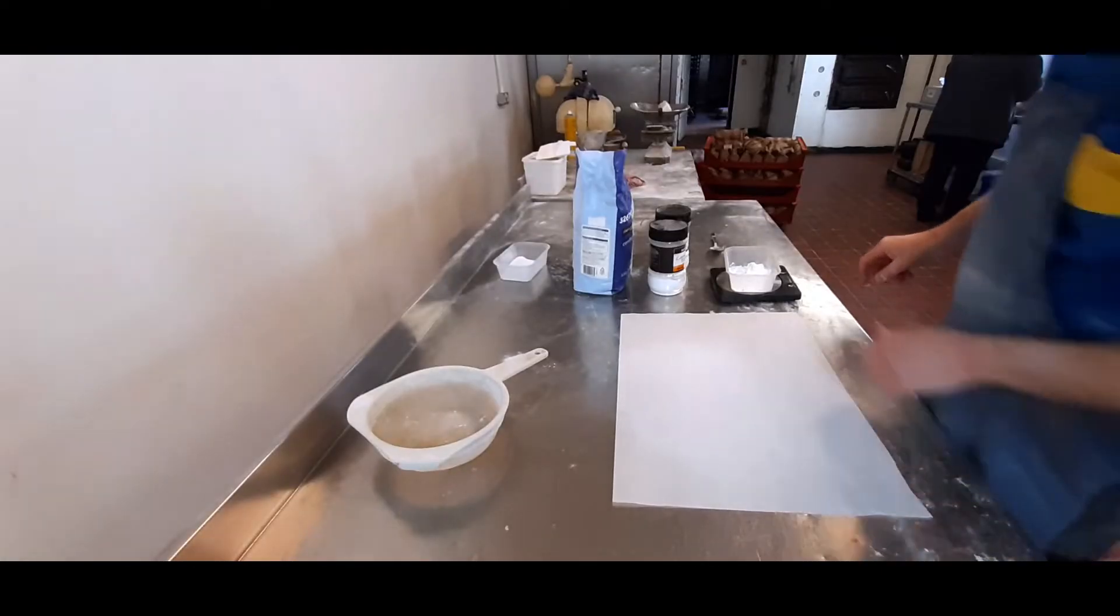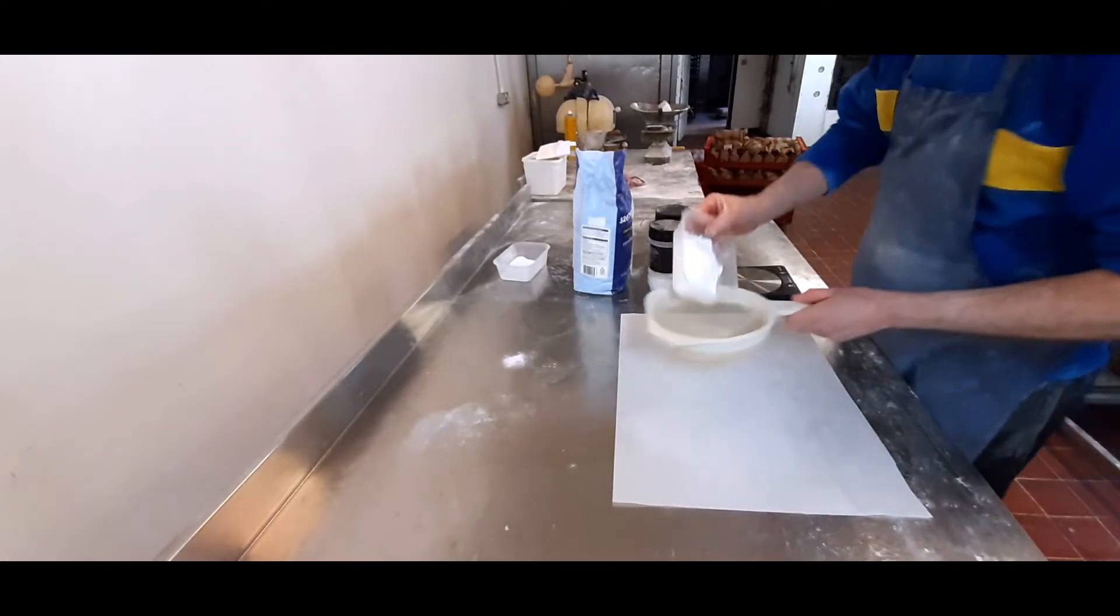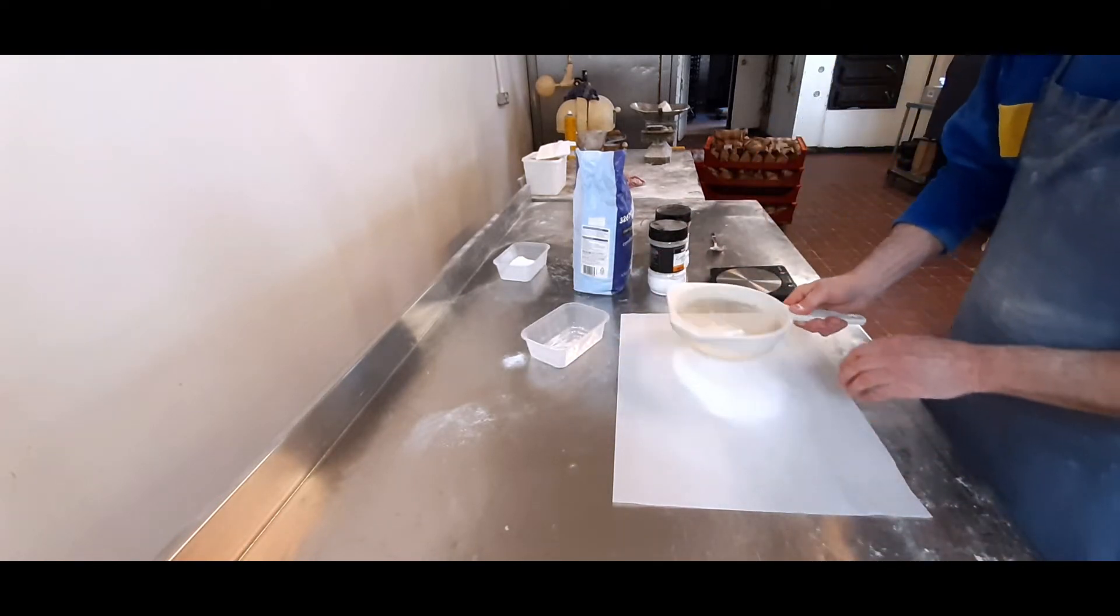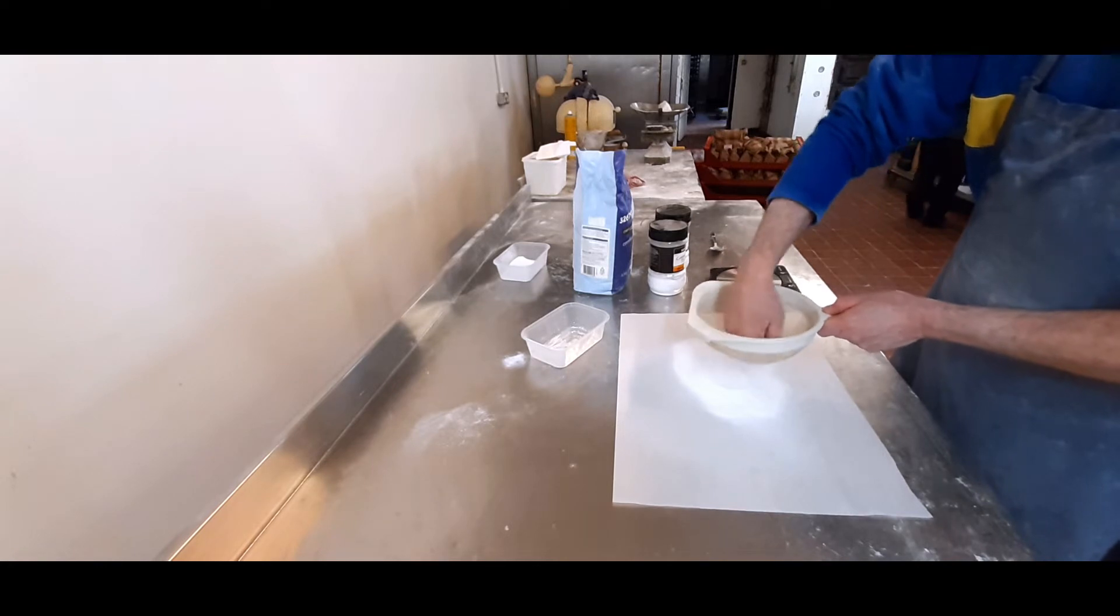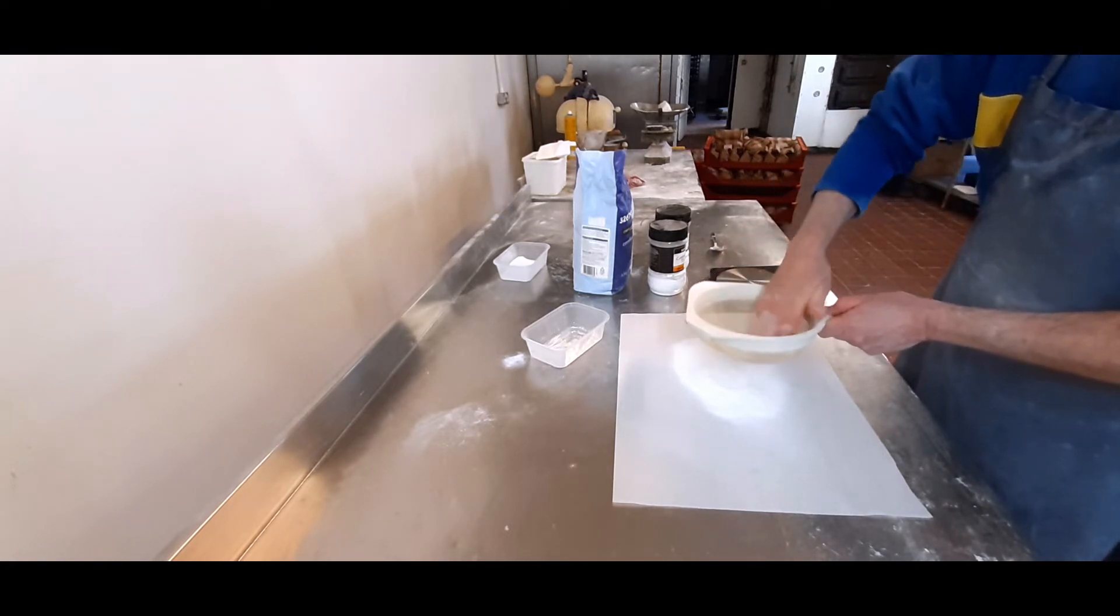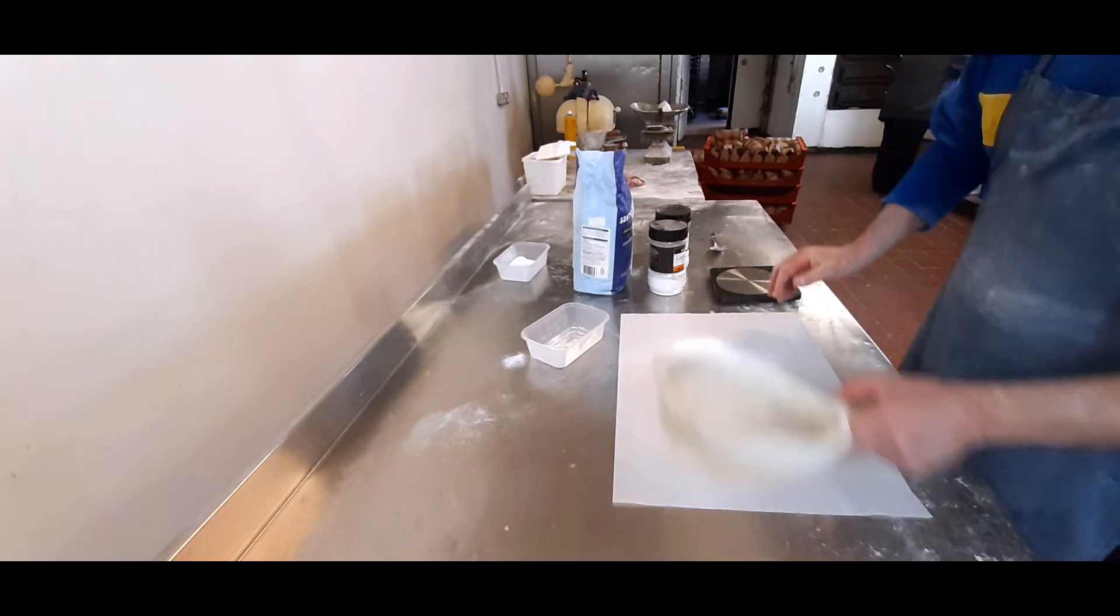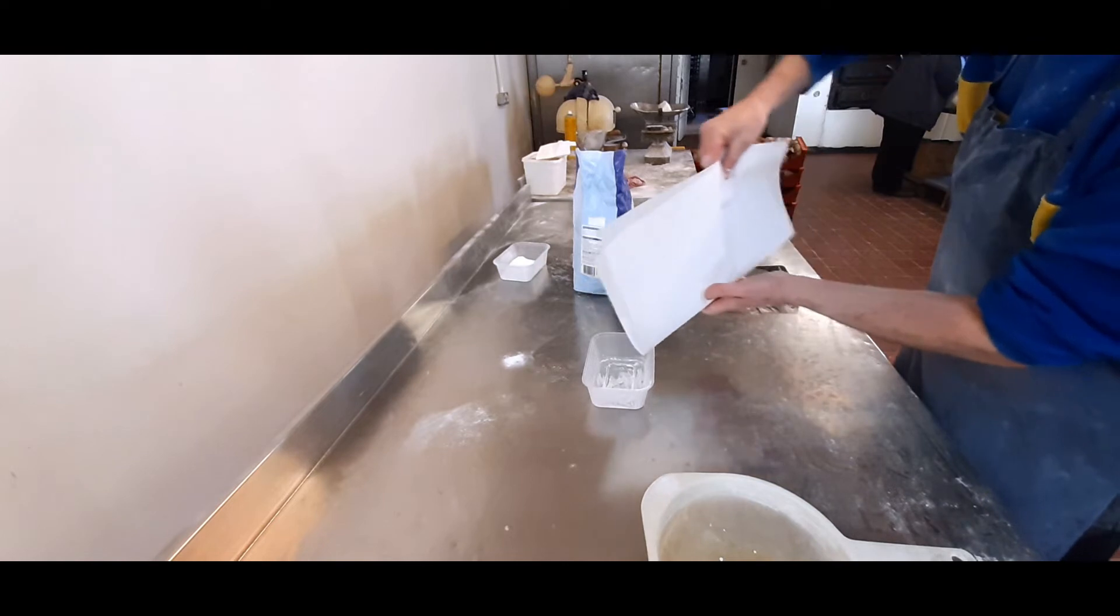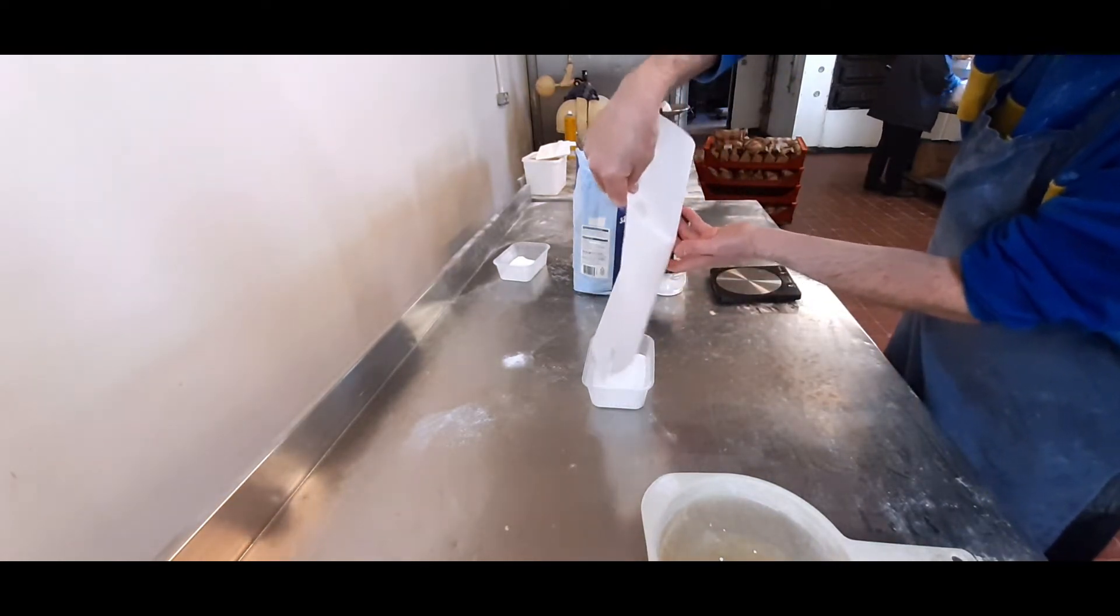Right, now all we're going to do with this is sieve it. We're now going to sieve this four times and get rid of any lumps and bits that's in the bottom, because bicarbonate soda always seems to be quite lumpy.